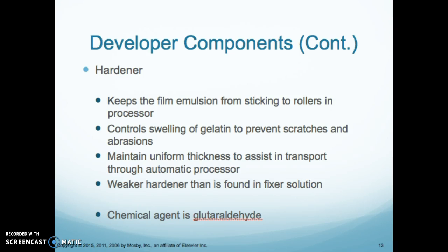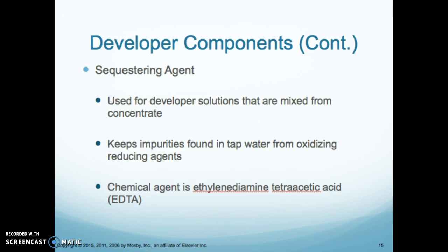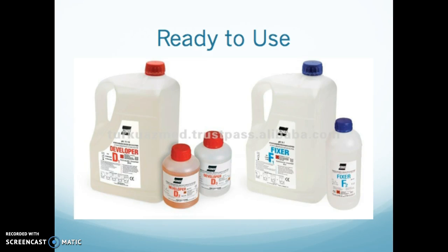The hardener keeps the film emulsion from sticking to the rollers, controls the swelling of the gelatin to prevent scratches and abrasions, and maintains uniform thickness to assist in transport through the automatic processor. Hardeners in the developer are weaker than those found in the fixer. The solvent — usually high-quality water — is mixed with the other components to create the developer solution. The sequestering agent keeps impurities found in tap water from oxidizing. Much of the solution comes pre-mixed, which is easy but more expensive; concentrate is cheaper but less convenient.